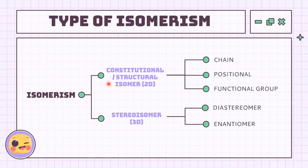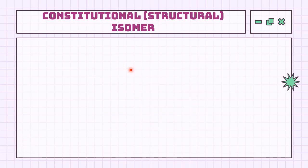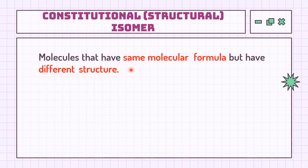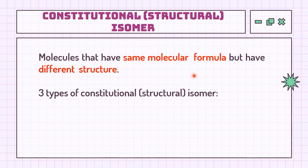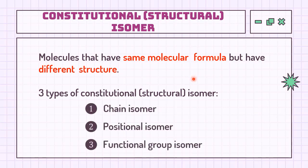There are two types of isomerisms. The first one is constitutional, also known as structural isomers, and the other one is stereoisomers. Each of them can be divided into further subtypes as shown on the slides. Structural isomers are those isomers in which the atoms are completely arranged in a different order in the same molecular formula. The three types of structural isomers we're going to learn are chain, positional, and functional group.